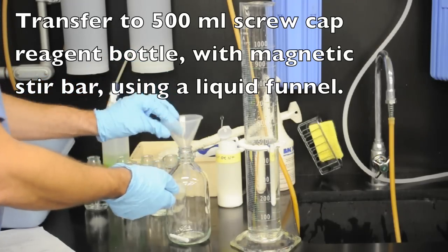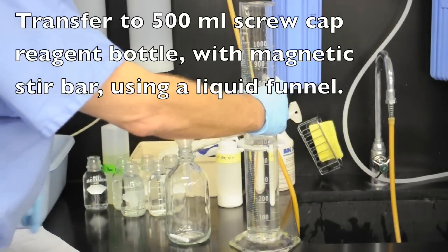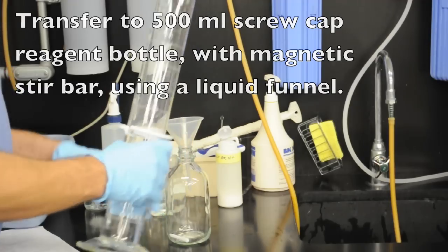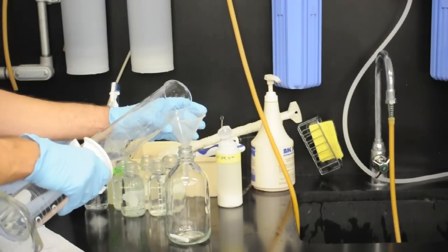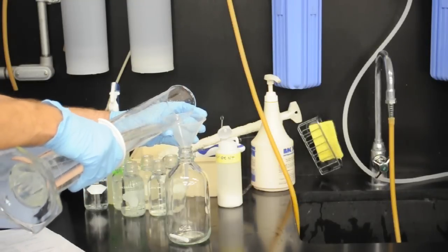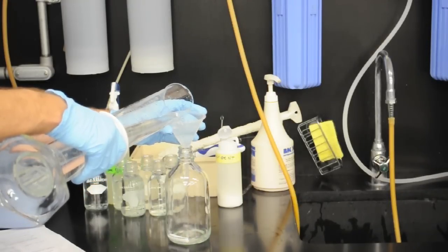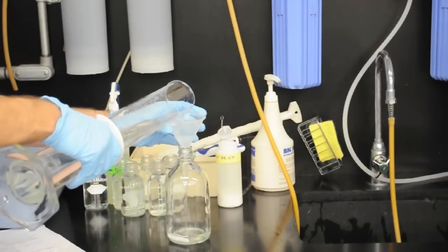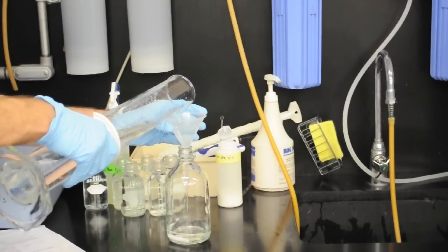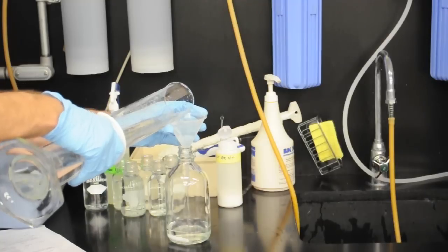Once we have our 500 milliliters of water, we want to transfer that to a specific reagent bottle. We're going to be storing this long term so we're going to use a screw cap bottle. As you can see, we've added a magnetic stir bar to the bottle and now we're just pouring or decanting the liquid into the bottle.